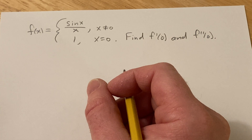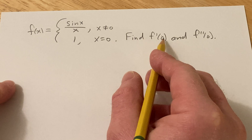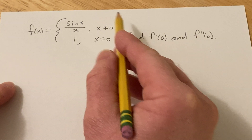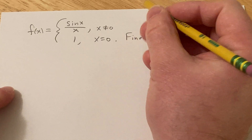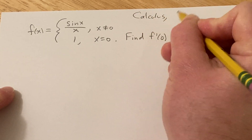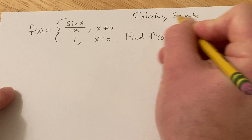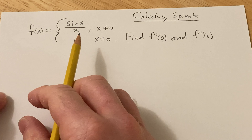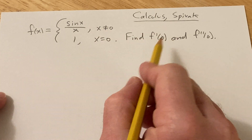In this video we're going to be finding the first derivative at zero and the second derivative at zero of this piecewise function. This is a problem from a book called Calculus by Michael Spivak. This book contains all kinds of fun problems, so I thought I would try to do this one. Let's work through it.